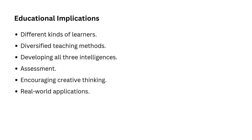Point three: developing all three intelligences. Education should focus on helping students build all three kinds of intelligence — teaching students to think critically (analytical), creatively solve problems (creative), and apply knowledge to everyday life (practical). Point four: assessment. Traditional tests might only measure analytical intelligence, but to get a full picture of students' abilities, assessment should include projects, presentations, and real-world tasks that evaluate creative and practical intelligence too.